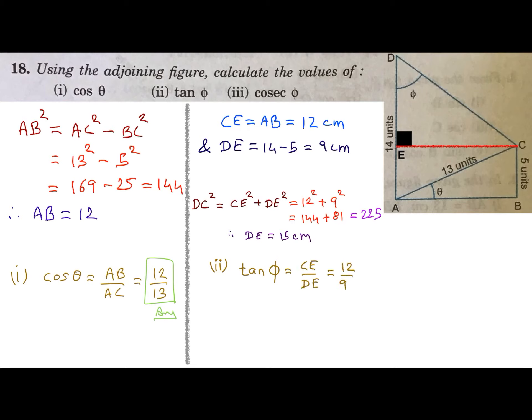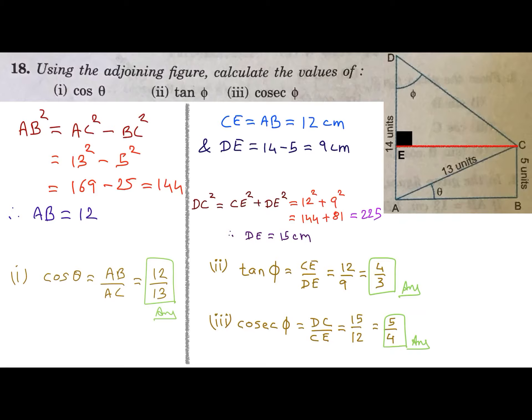So tan φ is opposite side CE upon adjacent side DE, that is 12 upon 9, or reduced to 4 upon 3. And cosec φ is hypotenuse DC upon opposite side CE, that is 15 upon 12, or 5 upon 4, which is the final answer.